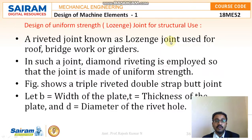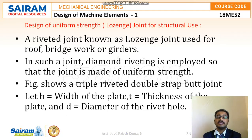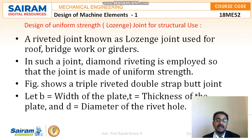Moving to the next design procedure: the design of uniform strength joint for structural use only. This uniform strength joint is also called a lozen joint, named after the person who invented this particular rivet joint. It is usually recommended for roof structures, bridge works, and girders.